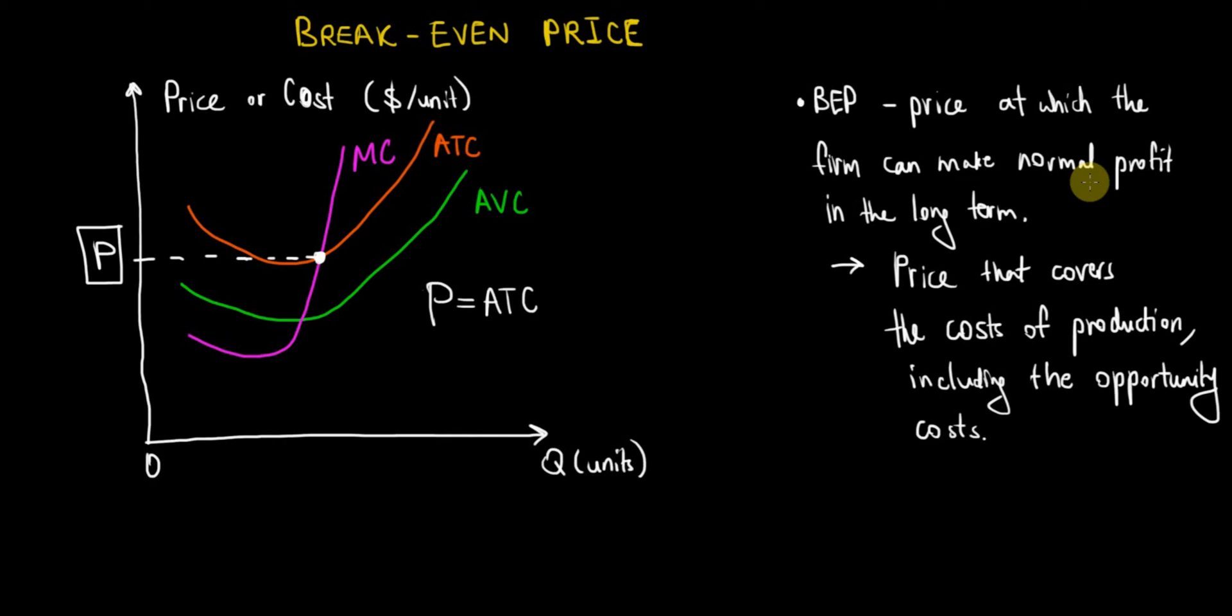Most importantly, do not confuse a zero economic profit with a zero accounting profit. The company is making accounting profit here, it's making money. It's just making as much money as it would in the next best alternative, that's why it's making normal profit.